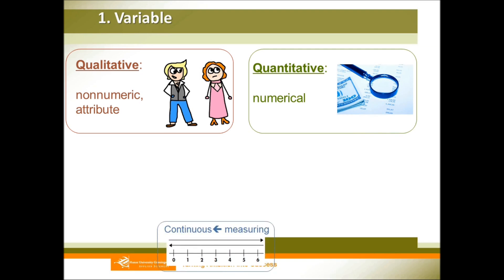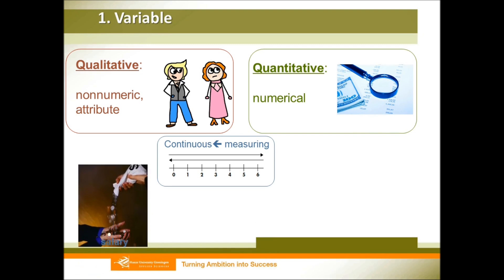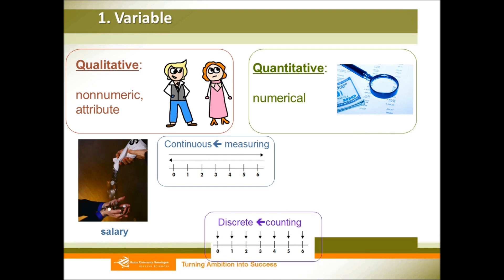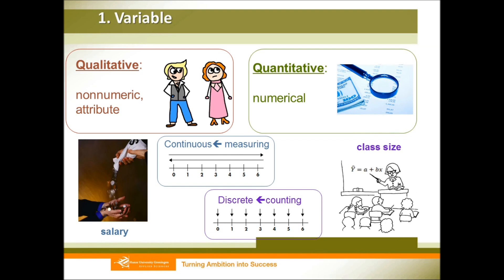We also distinguish continuous variables and discrete variables. For continuous variables, you are going to measure the data — for example, salary. All the data values between the numbers are meaningful, so that is a continuous variable. For discrete variables, you count the data, and values in between are not meaningful. For example, class size: we can only have 22 or 23, not 22.75. So that is a discrete variable.